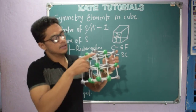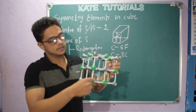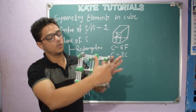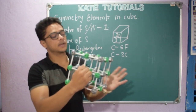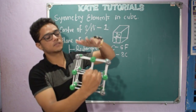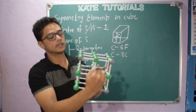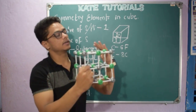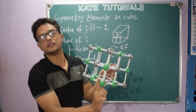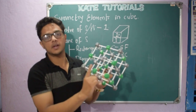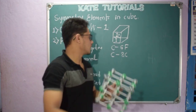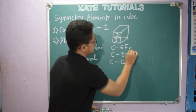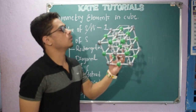Let us discuss about the edges. These lines are called edges. One face has four edges. Four plus four is eight, plus four more gives twelve edges totally. So each cube consists of twelve edges, six faces, and eight corners.